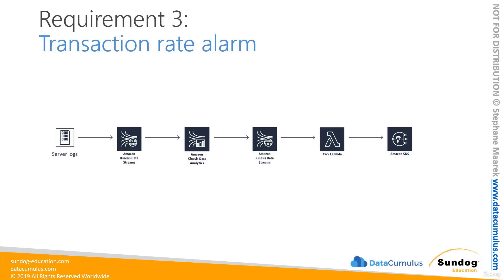Next, we'll create an operational system that alerts us if an unexpected rate of orders comes in all of a sudden. This might indicate some sort of attack that someone needs to deal with immediately, so it must work in real time. To build this, we'll use Kinesis Data Streams and Kinesis Data Analytics to monitor our incoming orders, and use a Lambda function to fire off alarms using Amazon SNS to your cell phone when something unusual happens.